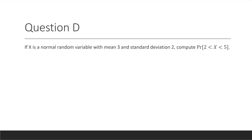If x is a normal random variable with mean 3 and standard deviation 2, let's compute the probability that x is between 2 and 5.